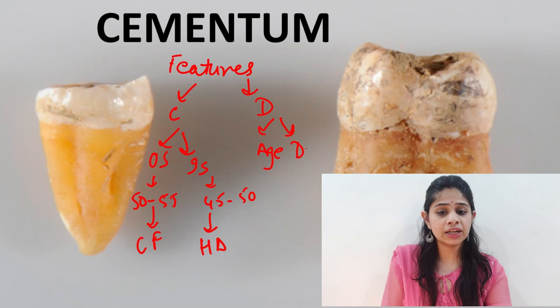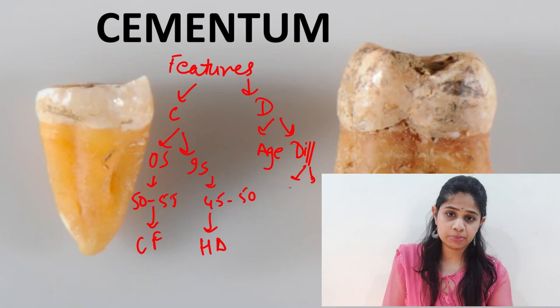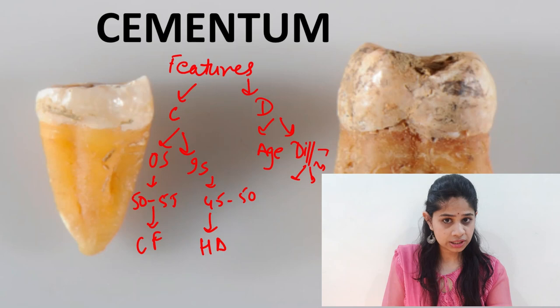We have the acellular cementum and the cellular cementum; we have the intrinsic and extrinsic fiber cementum. All these different types of cementum are seen along the root surface, which adds to the concept of the dynamic nature of cementum.